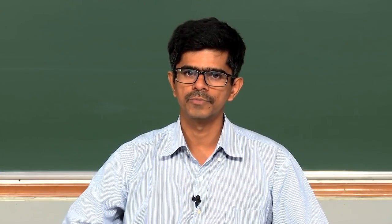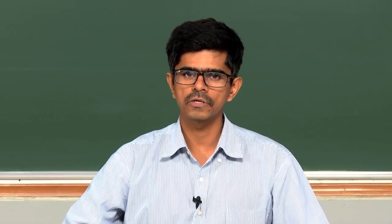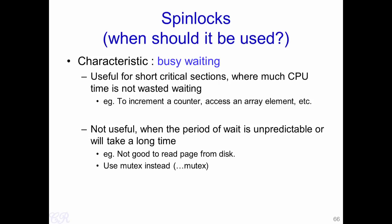In this video we will look at mutexes, which is a construct used to solve the critical section problem. We will start where we stopped in the last video with spin locks. The main characteristic of spin locks is that they use busy waiting — a while loop continuously invokes the exchange instruction until it returns 0. This busy waiting is not ideal, as it wastes CPU cycles and can lead to performance degradation and memory wastage.